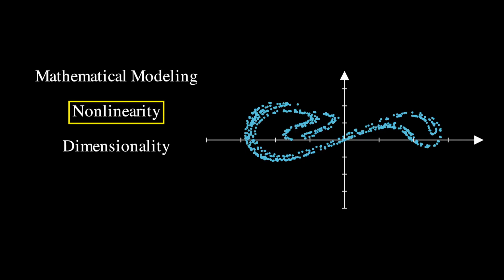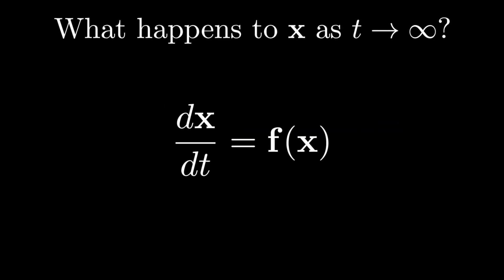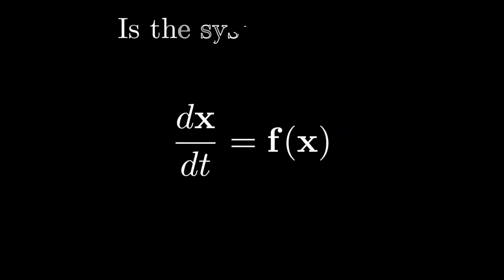The second challenge facing applied dynamical systems is nonlinearity, which makes the behavior harder to predict and analyze. For instance, let's say we want to answer questions like, what happens to the system as t goes to infinity? Is the system stable? If the system's dynamics are linear, these questions become easy to answer.